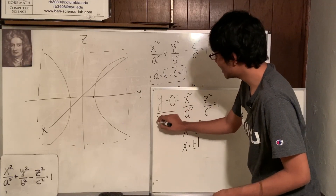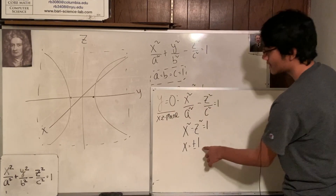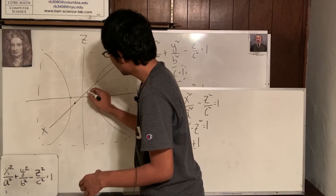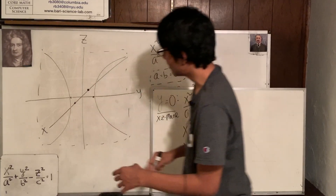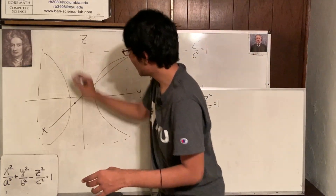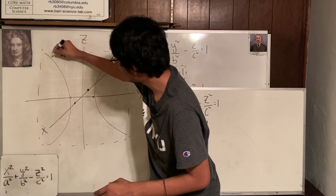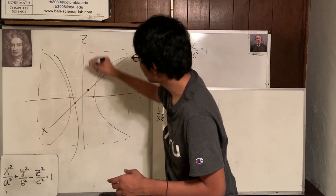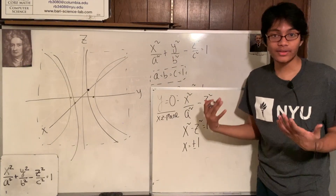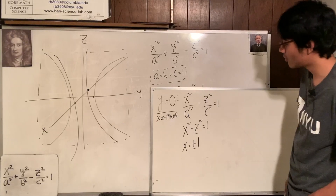X is plus or minus 1. Plus 1 is here, minus 1 is here. So what does that look like on the XZ plane? I'm going to draw my hyperbolas kind of like that — there's one, and there's two. I got another set of side-to-side hyperbolas.